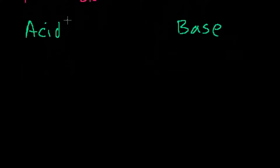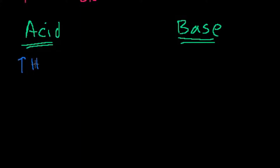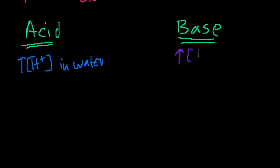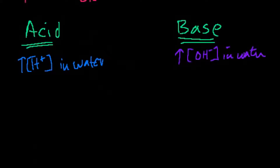Just to overcomplicate your life a little bit more, there are actually multiple definitions of an acid and multiple definitions of a base, and they become more and more broad in what they imply. The definition you're going to use most — the Arrhenius definition — is that an acid increases hydrogen concentration when you place it in water, and a base is something that increases your hydroxide concentration in water. This is what you'll see in 90% of first-year chemistry classes.